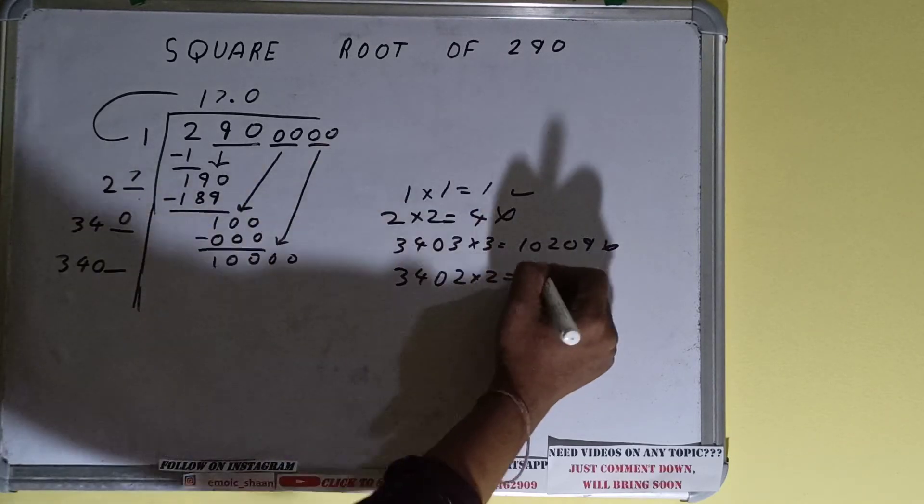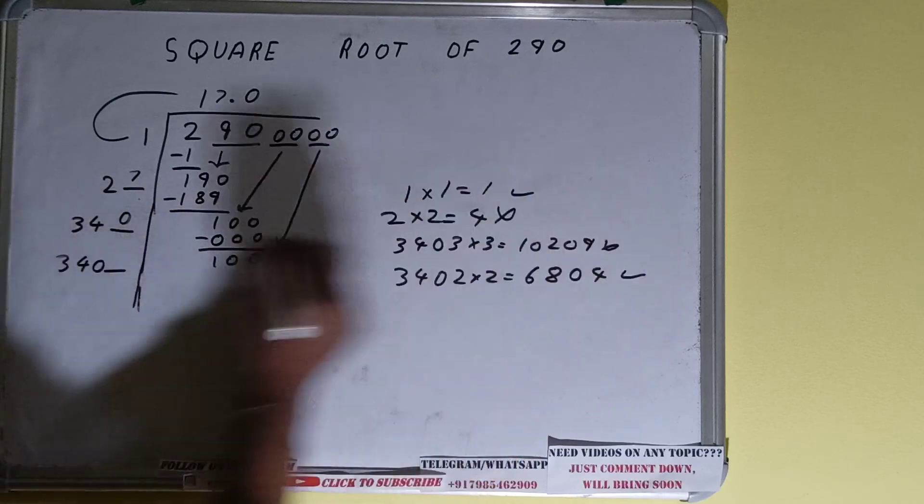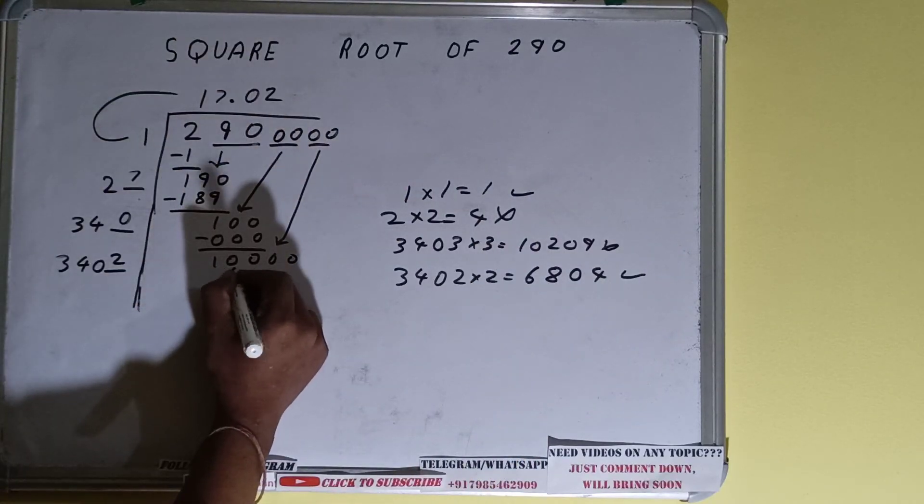It will be 6804 which is good to take. So two here and two here, 6804 subtract it.